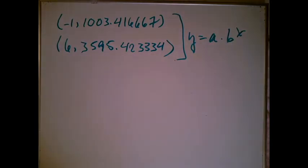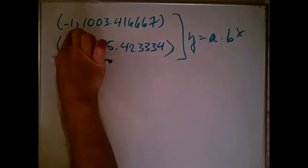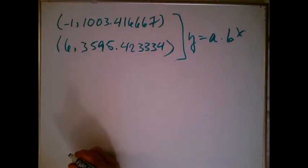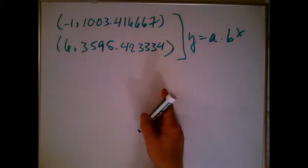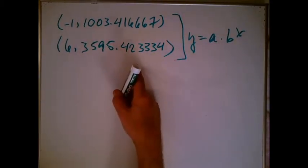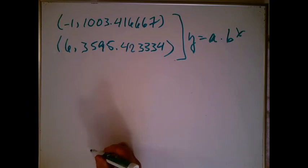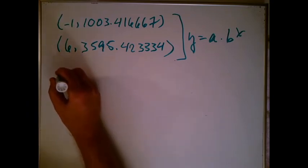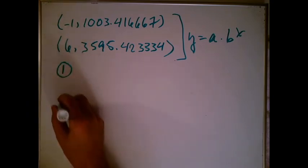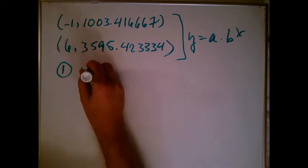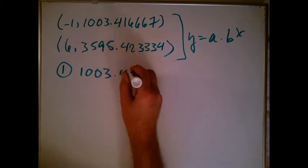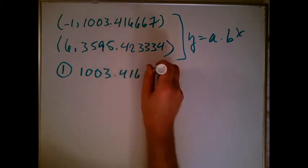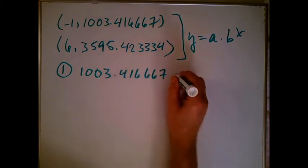Now, remember how this works. What we're supposed to do is plug in minus one for x, and we're going to get the 1003 blah blah blah for an answer. And when I plug in the six in for x, I'm going to get the 3595 point blah blah blah as an answer. So we're going to get two equations. Let's write it down, the two equations, and we'll just see what we can do.